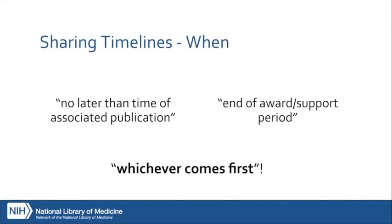For data that does not form the basis of a publication, all of that data is still required to be shared by the end of the award period — the 'whichever comes first.' Portions of the data or certain data types not included in a publication should be shared by the end of the grant award period. This will depend on the grant itself, as grants vary in their length. What's important is that the policy is asking researchers to know and document what those timelines are.